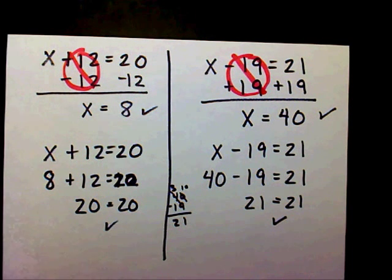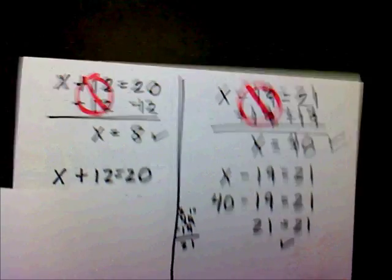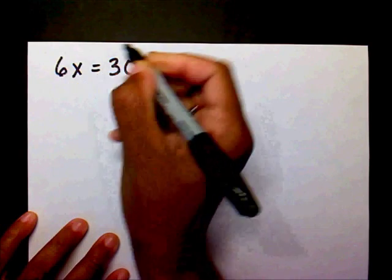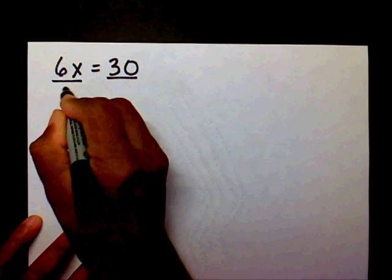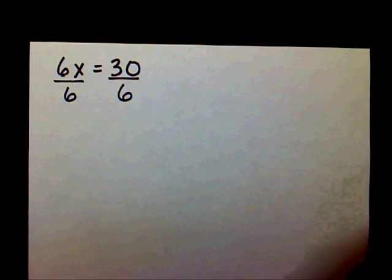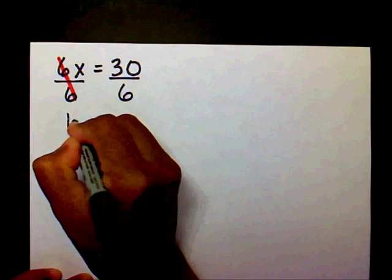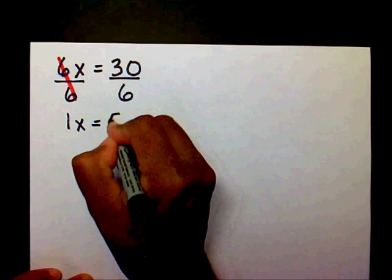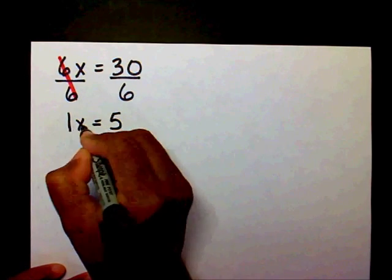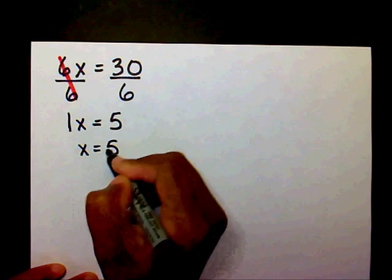The next problem is 6x equals 30. So we're going to divide both sides by 6. 6 divided by 6 creates 1. So we have 1x equals 30 divided by 6 is 5. And we know that we can either write 1x equals 5 or we can just write x equals 5.